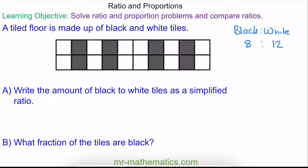To simplify this ratio, I'm going to divide both of these numbers by our highest common factor, which is 4. 8 divided by 4 makes 2, and 12 divided by 4 makes 3. So our simplified ratio of black to white is 2 to 3.